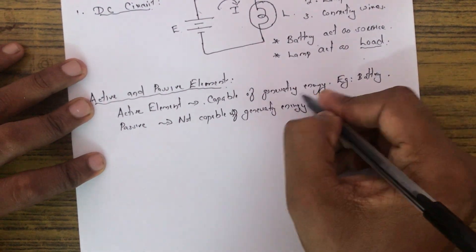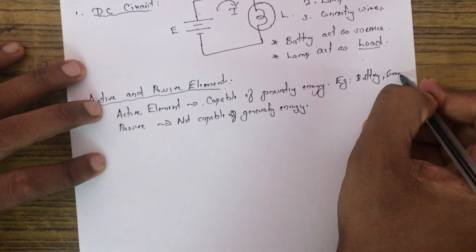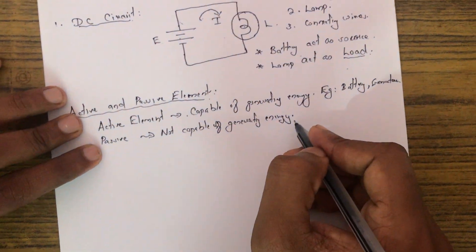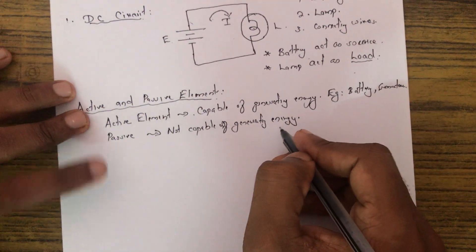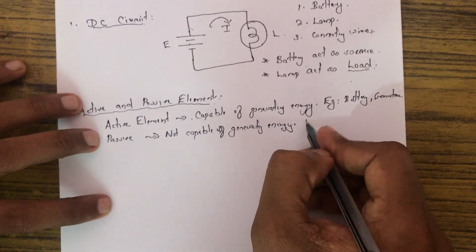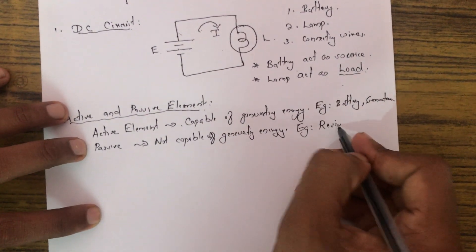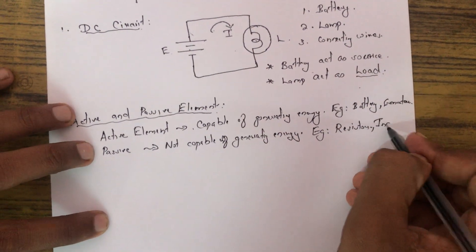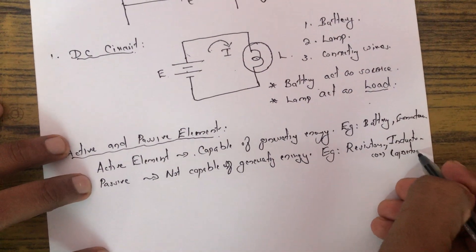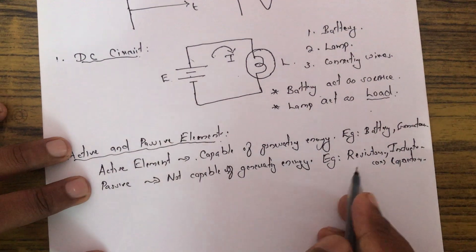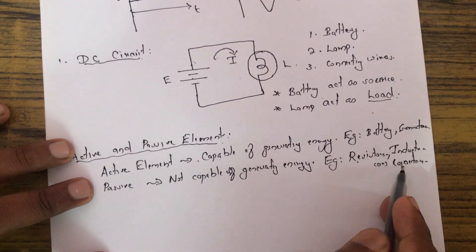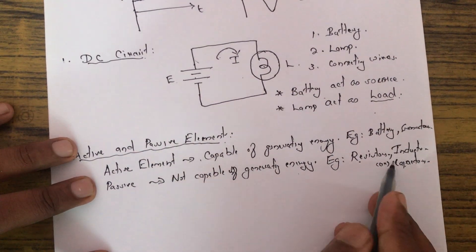Examples of active elements are batteries or generators — they produce energy. Examples of passive elements are resistors, inductors, and capacitors. Resistors consume electrical energy, while inductors and capacitors store energy in magnetic and capacitive fields respectively.